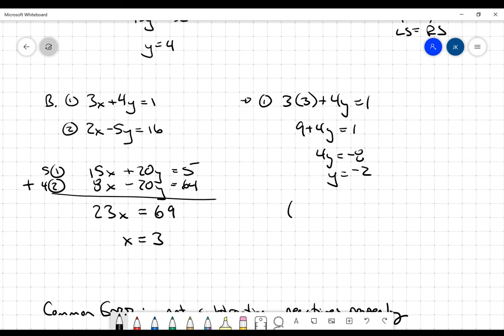So I think that the point should be the point here, 3 comma negative 2. Now let's check that.